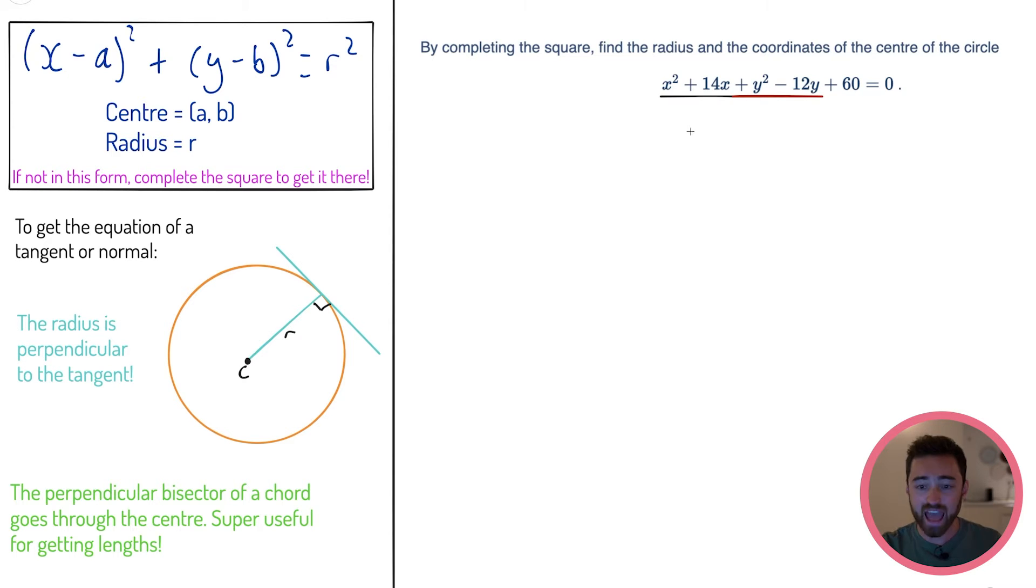I'm going to do that now for you. x² + 14x - do we remember how to complete the square? We have (x + half of the coefficient of the x term), so in this case it would be 7, all of that squared minus this squared, so minus 49. Same thing with the y's. I'm going to have (y - 6)² minus 36, because 6 squared is 36, add 60 equals 0.